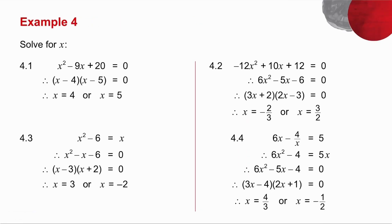In the first one, I've got a trinomial. So factorize the trinomial into its two brackets. Either x minus 4 is 0, so x is 4, or x minus 5 is 0, so x is 5.